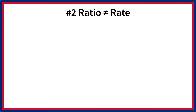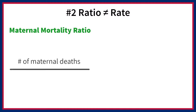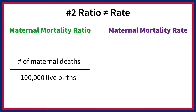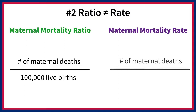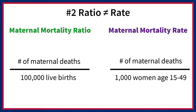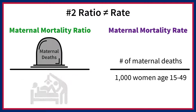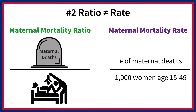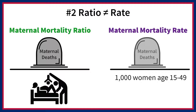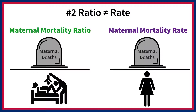Second, the maternal mortality ratio is not the same as the maternal mortality rate. The maternal mortality ratio is the number of maternal deaths during the reference period per 100,000 live births in the same reference period. The maternal mortality rate is the number of maternal deaths per 1,000 women aged 15 to 49. The MMR compares maternal deaths to births, while the maternal mortality rate compares maternal deaths to the number of women aged 15 to 49.